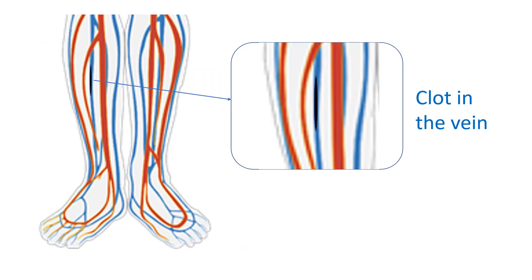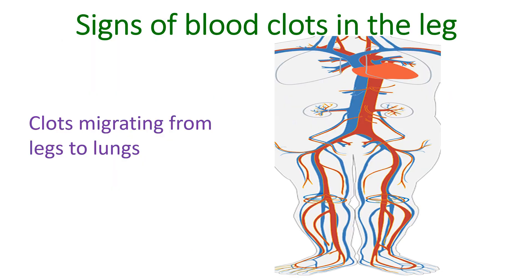Clots in the veins can occur when one is bedridden after a major illness, surgery, or fracture. This can be prevented to some extent by active or passive movements of the legs while taking rest. Medications can also help to prevent clot formation in the veins. Clots in the veins obstruct return of blood from the legs to the heart and lungs, causing the legs to become swollen and painful with a bluish-red color.